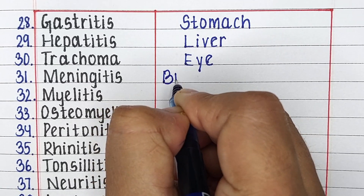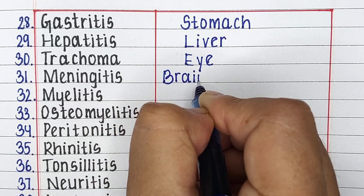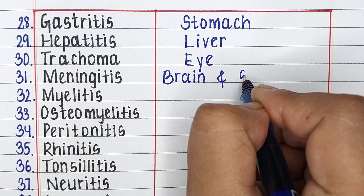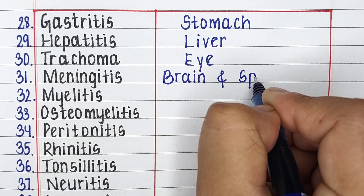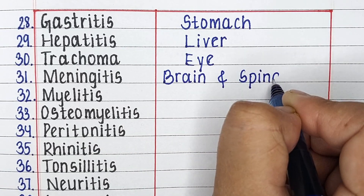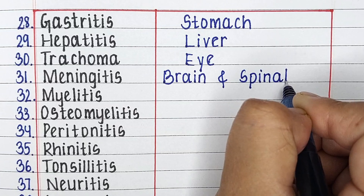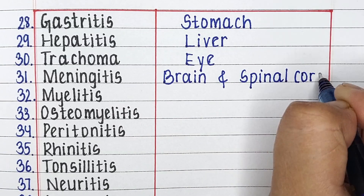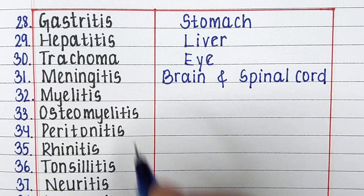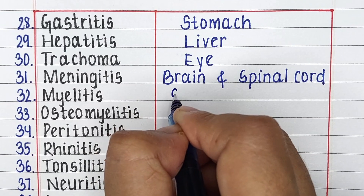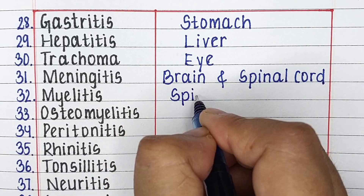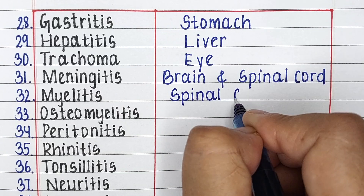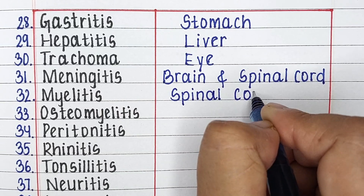Next is trachoma. Trachoma primarily affects the eyes. Next is meningitis. It affects the brain and spinal cord. Next is myelitis. Myelitis generally affects the spinal cord.